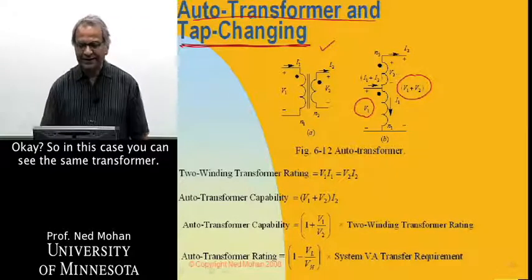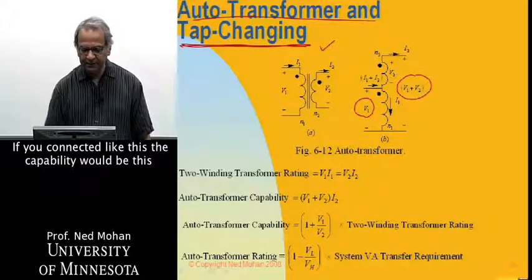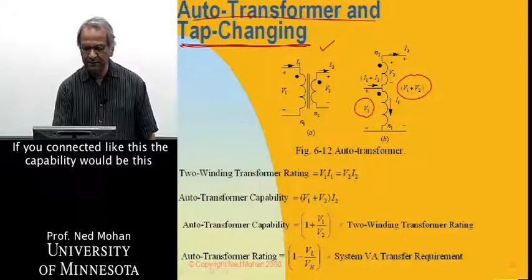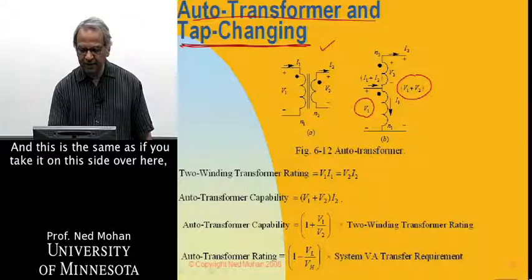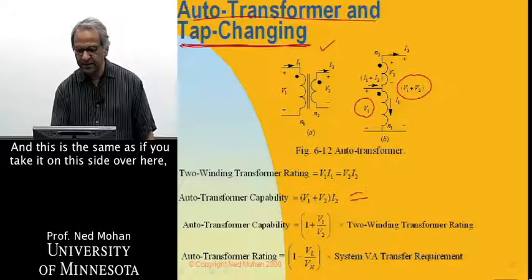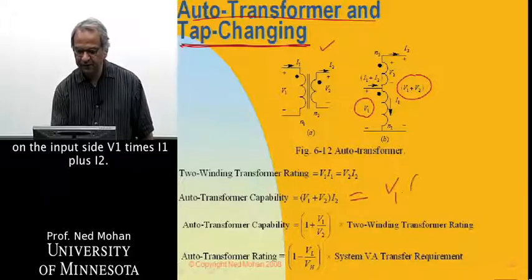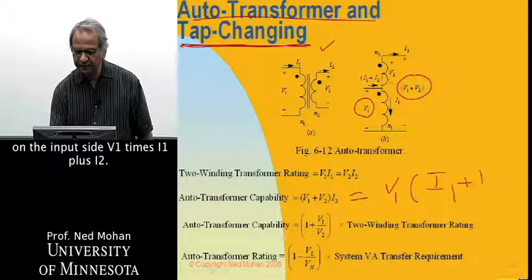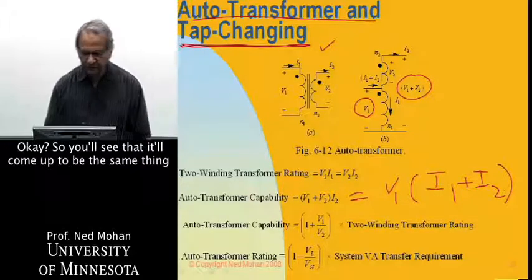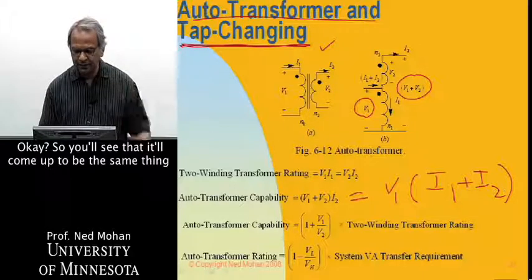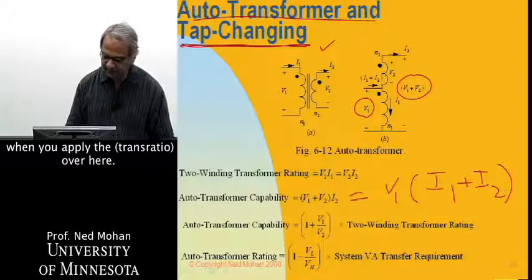So in this case, you can see the same transformer. If you connect it like this, the capability would be this voltage, V1 plus V2 times I2. And this is the same as if you take it on this side, on the input side, V1 times I1 plus I2. So you'll see that it'll come up to be the same thing when you apply the turns ratio over here.